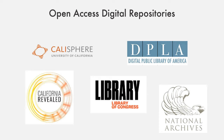Next is the Library of Congress, which as you may have heard is the largest library in the world, with millions of books, recordings, photographs, newspapers, maps, and manuscripts in its collection. They have digitized select materials from this vast collection and made them publicly available online through their own website. The National Archives and Records Administration, or NARA, also hosts an online catalog that contains digital versions of the U.S. government's enormous collection of documents that record important events in American history.